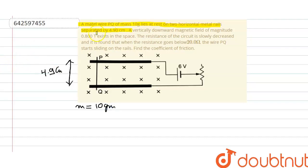Let's further read the question. A vertically downward magnetic field of magnitude 0.8 tesla exists in the space. So there is magnetic field which is pointing downwards.